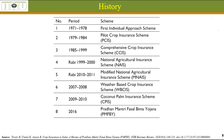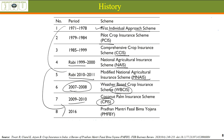History of crop insurance in India: it began with the individual approach scheme, followed by the Pilot Crop Insurance Scheme, Comprehensive Crop Insurance Scheme, Modified National Agricultural Insurance Scheme (NAIS) introduced in Rabi 2010, Weather Based Crop Insurance Scheme from 2007-08, and Coconut Palm Insurance Scheme from 2009-10. All these schemes have now been incorporated into Pradhan Mantri Fasal Bhima Yojana.